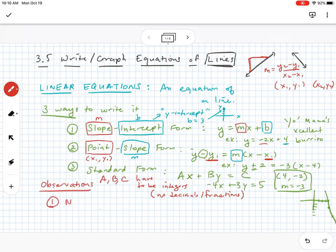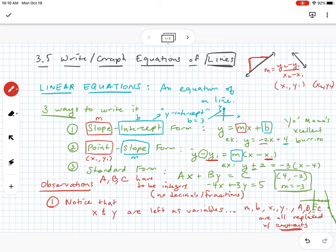Some observations I want to make. One observation is this: notice that x and y are left as variables. All the other letters, M, B, X1, Y1, A, B, C, these are all replaced with constants. So a constant is a number that never changes. It's a number that always stays the same.